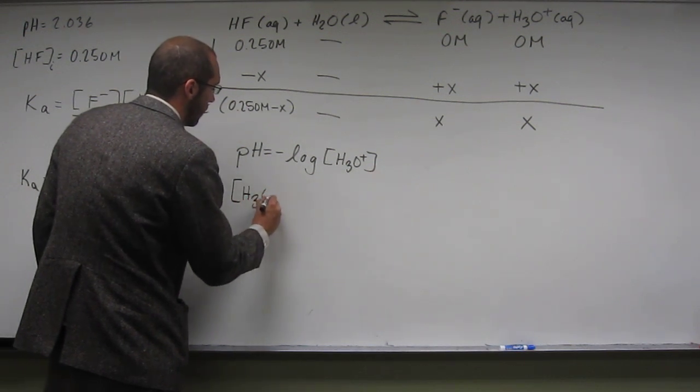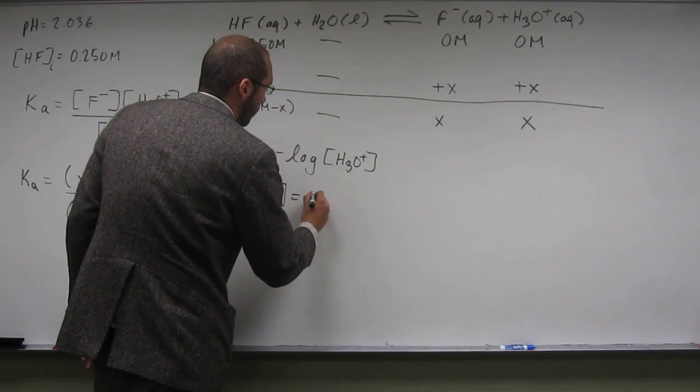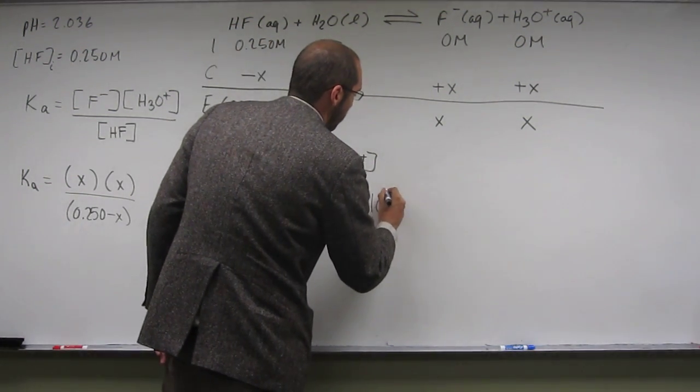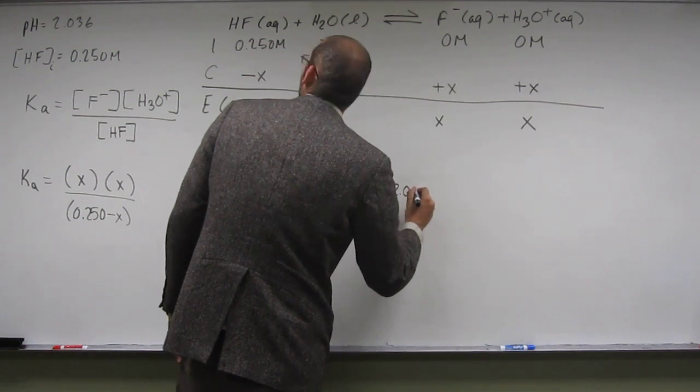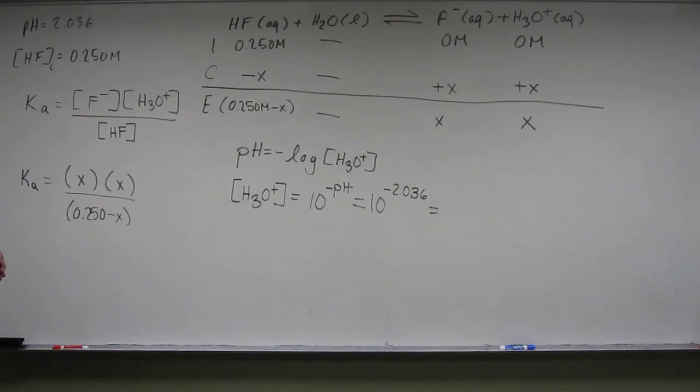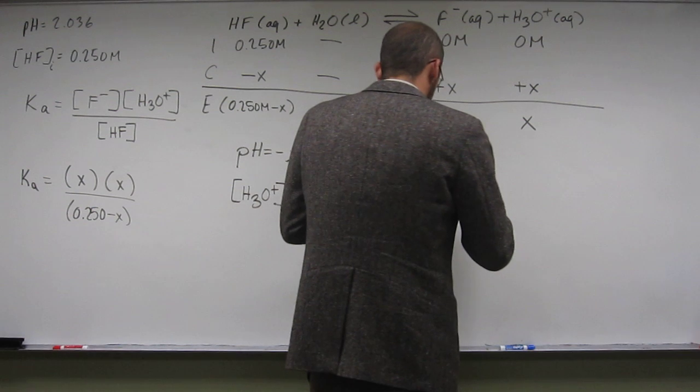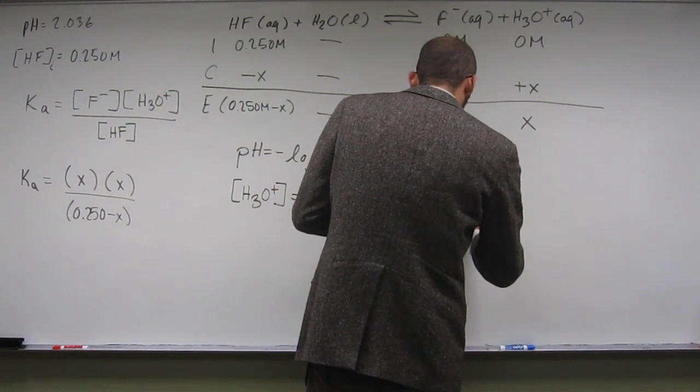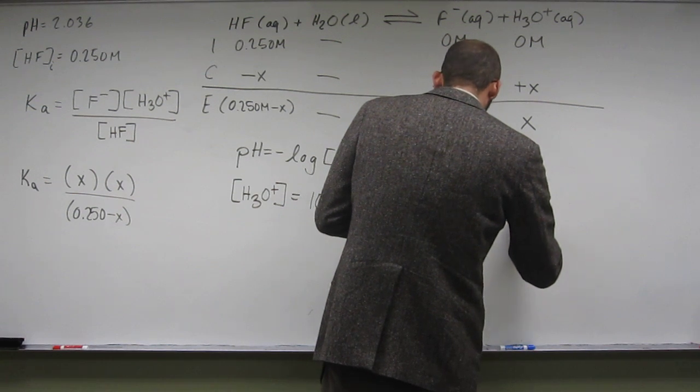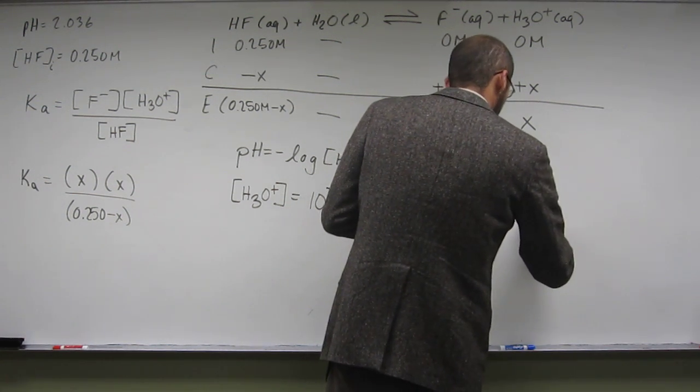So we rearrange this. H3O plus equals 10 to the negative pH, which equals 10 to the negative 2.036. So we're going to have to plug that into our calculator.